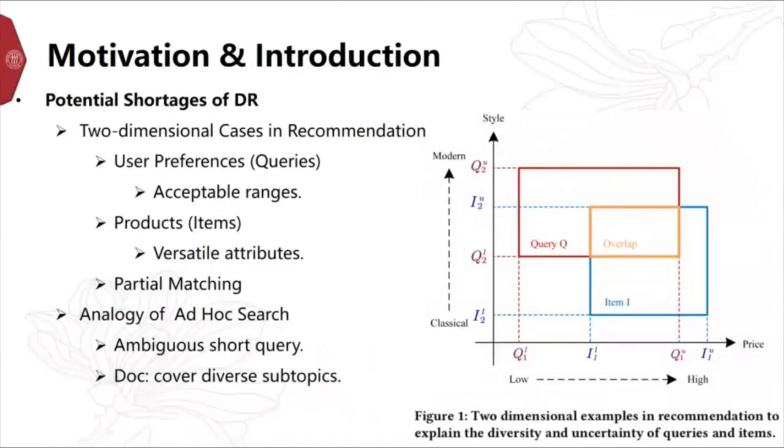From this figure, we can see that a user may have some acceptable ranges of price and style for the product, and a product may also be associated with price fluctuation and several styles due to its versatile attributes. The user usually chooses a product based on the partial matching of her preference and item attributes. Similarly, for ad-hoc search, the short queries may be ambiguous and be relevant to several subtopics. A document may cover diverse topics and thus be relevant to queries with disparate information needs.